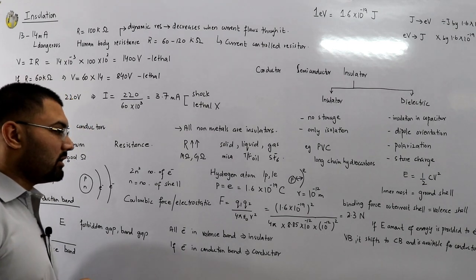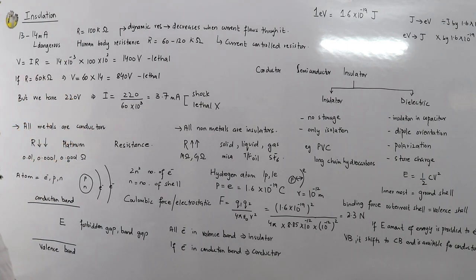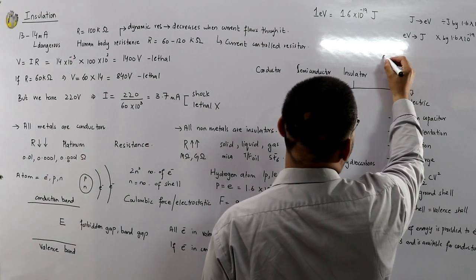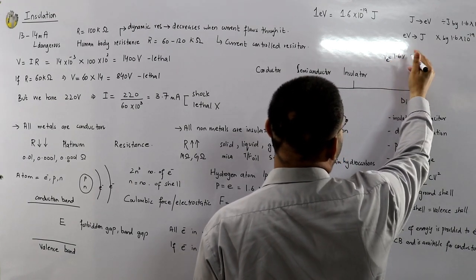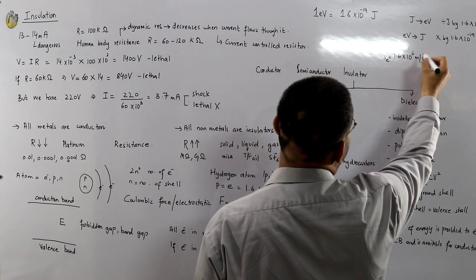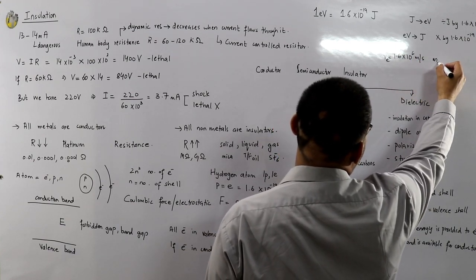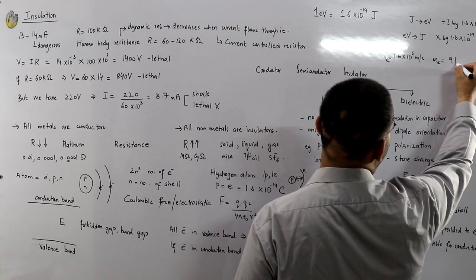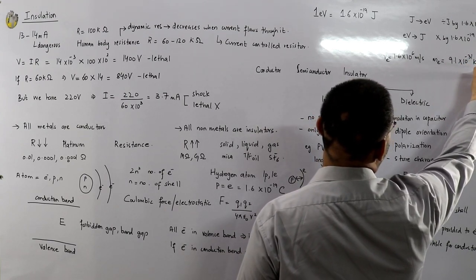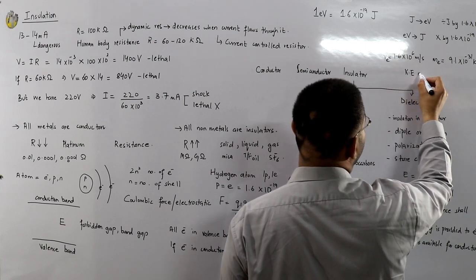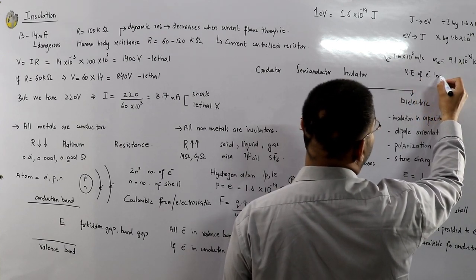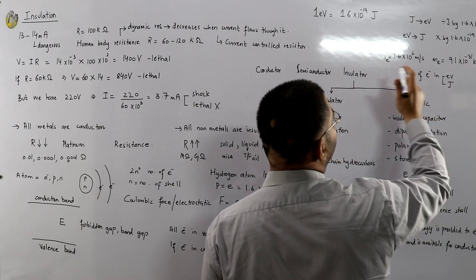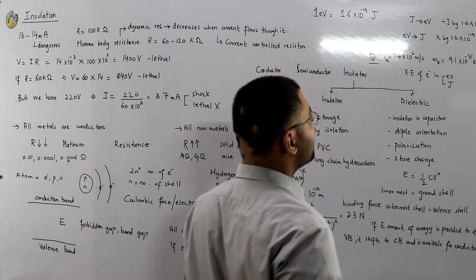For example: if the velocity of an electron is 1.6 × 10⁶ m/s and the mass of an electron is 9.1 × 10⁻³¹ kg, calculate the kinetic energy of the electron in both electron volts and joules. This is your homework — let me know the answer in the comment section.